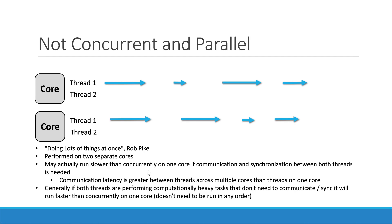Now some people have actually set GOMAXPROCS and their code ran slower, which is a surprise to many. You'd usually think using more cores has to run faster because we're utilizing more resources. But if these two Go routines have to communicate and synchronize, there can be a penalty communicating between cores — that latency of passing information from core to core is much greater than between threads on the same core. So if you run GOMAXPROCS and it's a little bit slower, that's likely what you're running into. However, if you have something computationally heavy and the Go routines don't need to communicate at all, it probably would be faster to put them on separate cores so they can keep working without getting in each other's way.